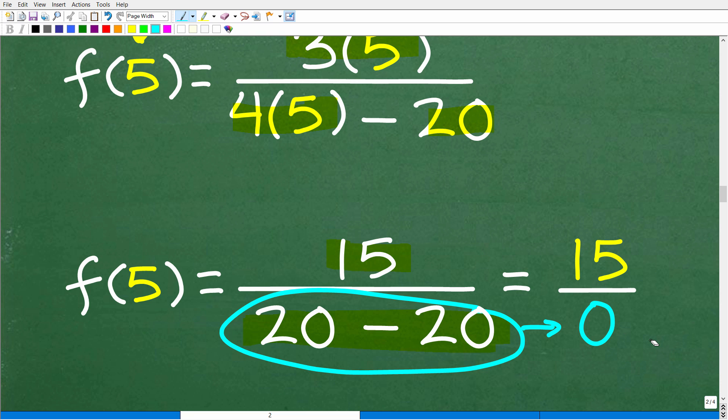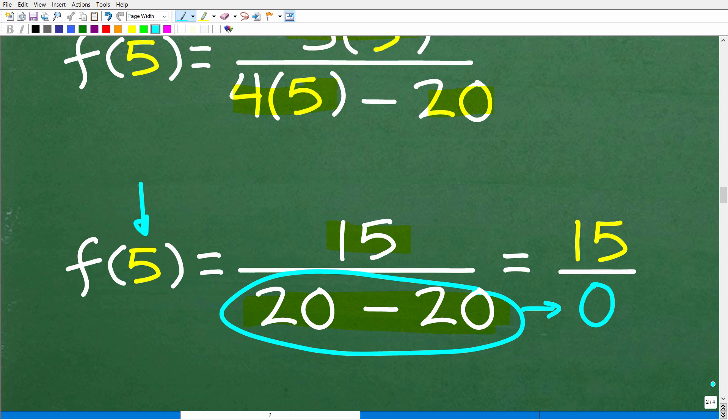So, this means that 5 is not allowed in this function. It's not allowed in the set of real numbers, even like in the set of complex numbers. So, the way we would kind of identify that is to state that you can put anything into this function. So, the domain of this function can be all real numbers with the exception x cannot be 5.